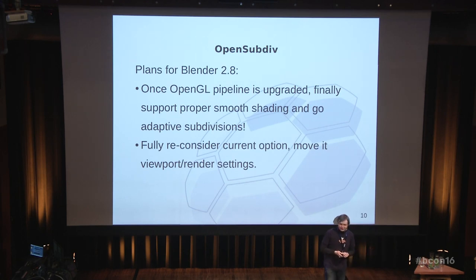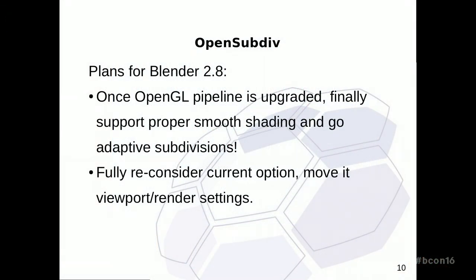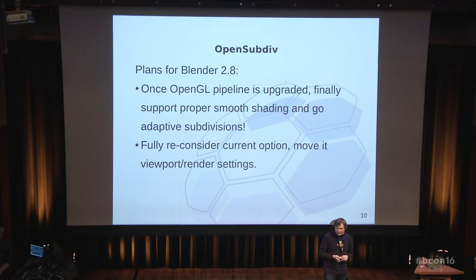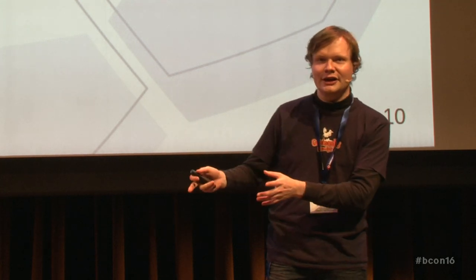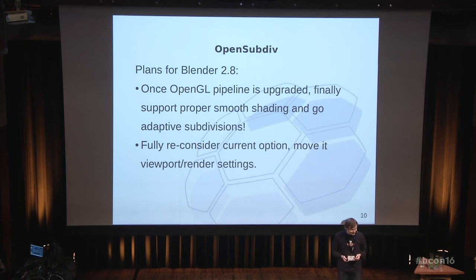What's going to happen with OpenSubdiv in the next year? Hopefully in the 2.8 branch we will be bumping the OpenGL requirement to a much newer version where tessellation shaders and geometry shaders can work together without any hacks or workarounds. Then we can finally support proper smooth shading by evaluating smooth normals on the GPU side, because currently some approximations don't necessarily work well. There are also plans to reconsider how OpenSubdiv is integrated into the modifier stack, because currently combining parenting to a mesh and subdividing that mesh forces you to the CPU side of evaluation.